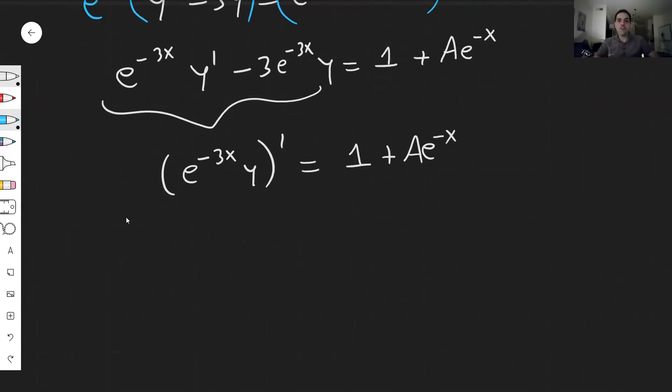And then great, now all you have to do is integrate. So you get e^(-3x)y = ∫(1 + Ae^(-x))dx. And so e^(-3x)y becomes x - Ae^(-x). If you're wondering where this minus comes from, an antiderivative of e^(-x) is e^(-x) over -1. And remember your constant B.